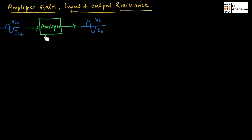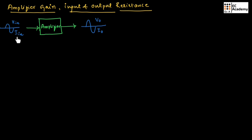From our previous discussion, we understood that an amplifier amplifies the weak signal, which means it increases the power of the weak signal to produce a strong signal. As you can see from this diagram, we have a small signal at the input and a large signal at the output.